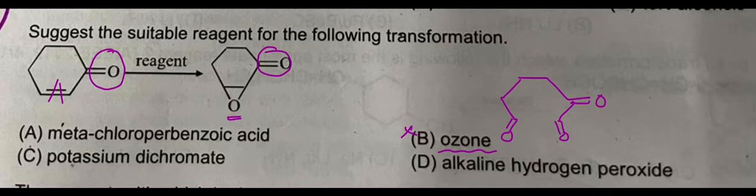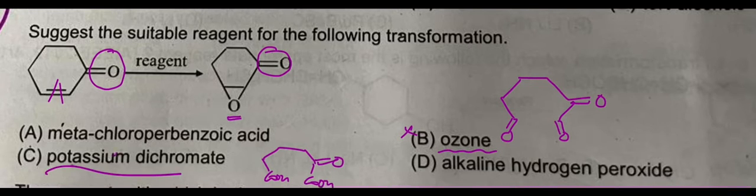Potassium dichromate is a very strong oxidizing agent that even breaks the double bond, and it will be converted to acids. If you use this, the ketone part will also be converted. First, the double bond will be converted like this. So potassium dichromate is also not your choice.